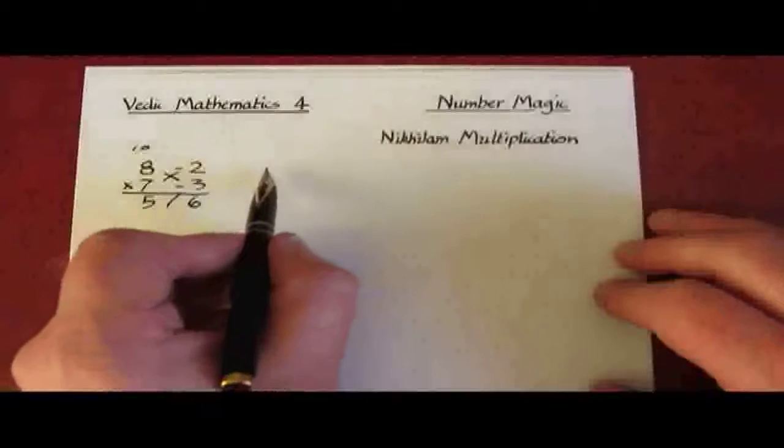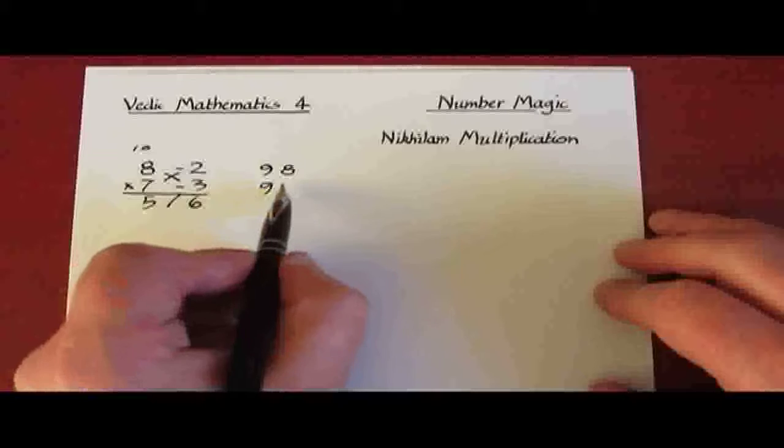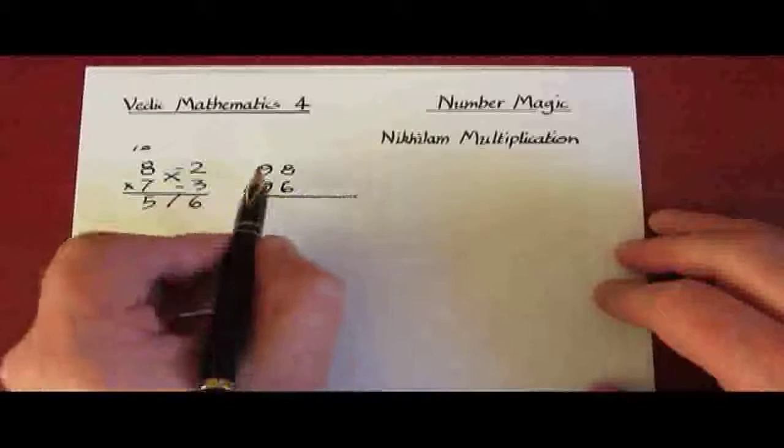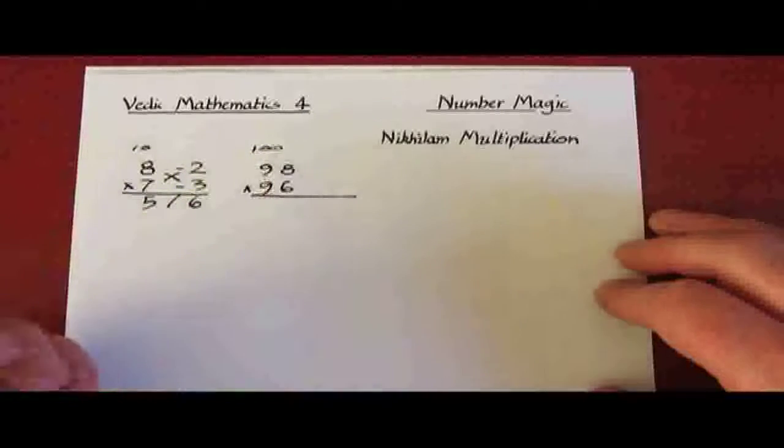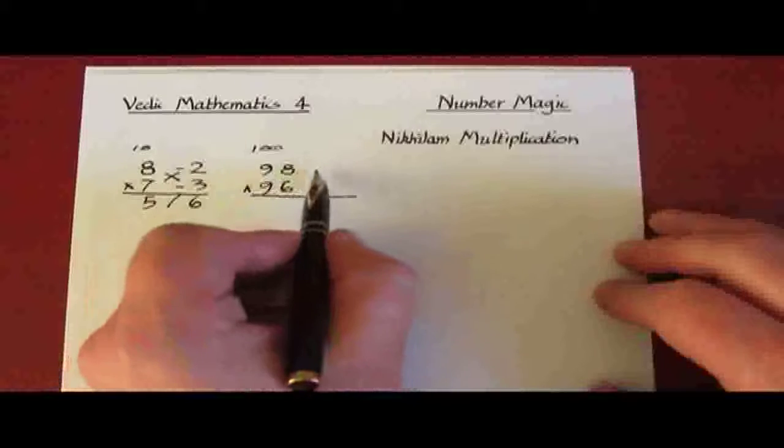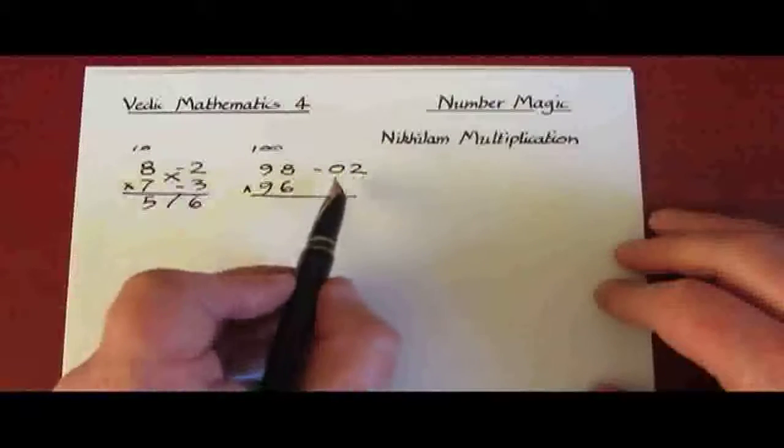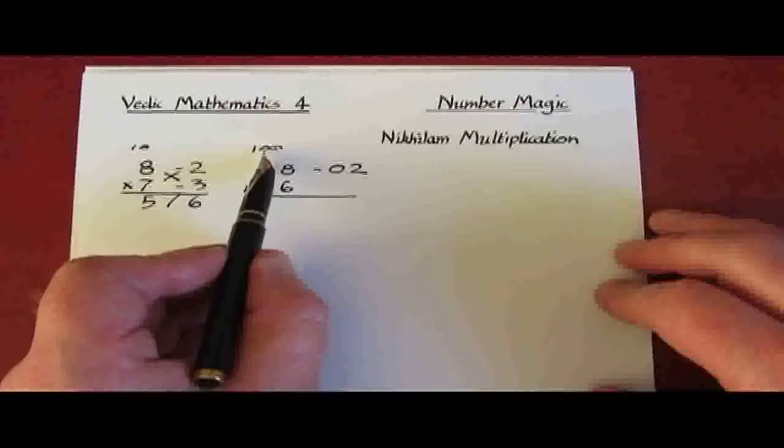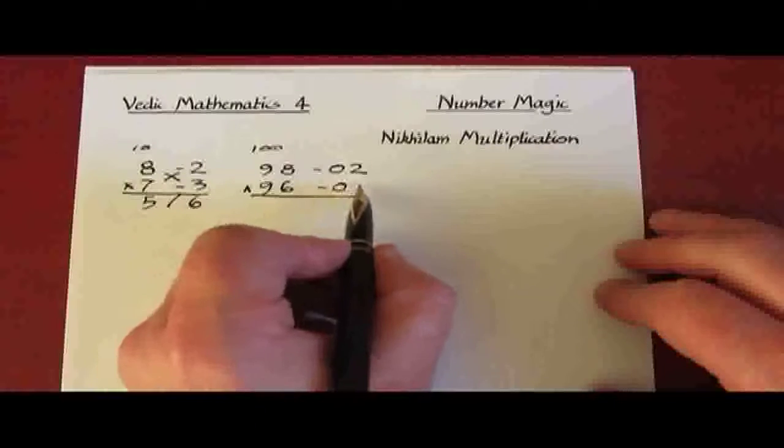But we'll take another example which is a bit more impressive, which is 98 times 96. And it's a very easy method. Here the base is 100 and we are going to relate these two numbers to 100. 98 is less by 2, we put 02, and the two digits here follow the fact that 100 has two zeros. And the deficiency for 96 is 4.